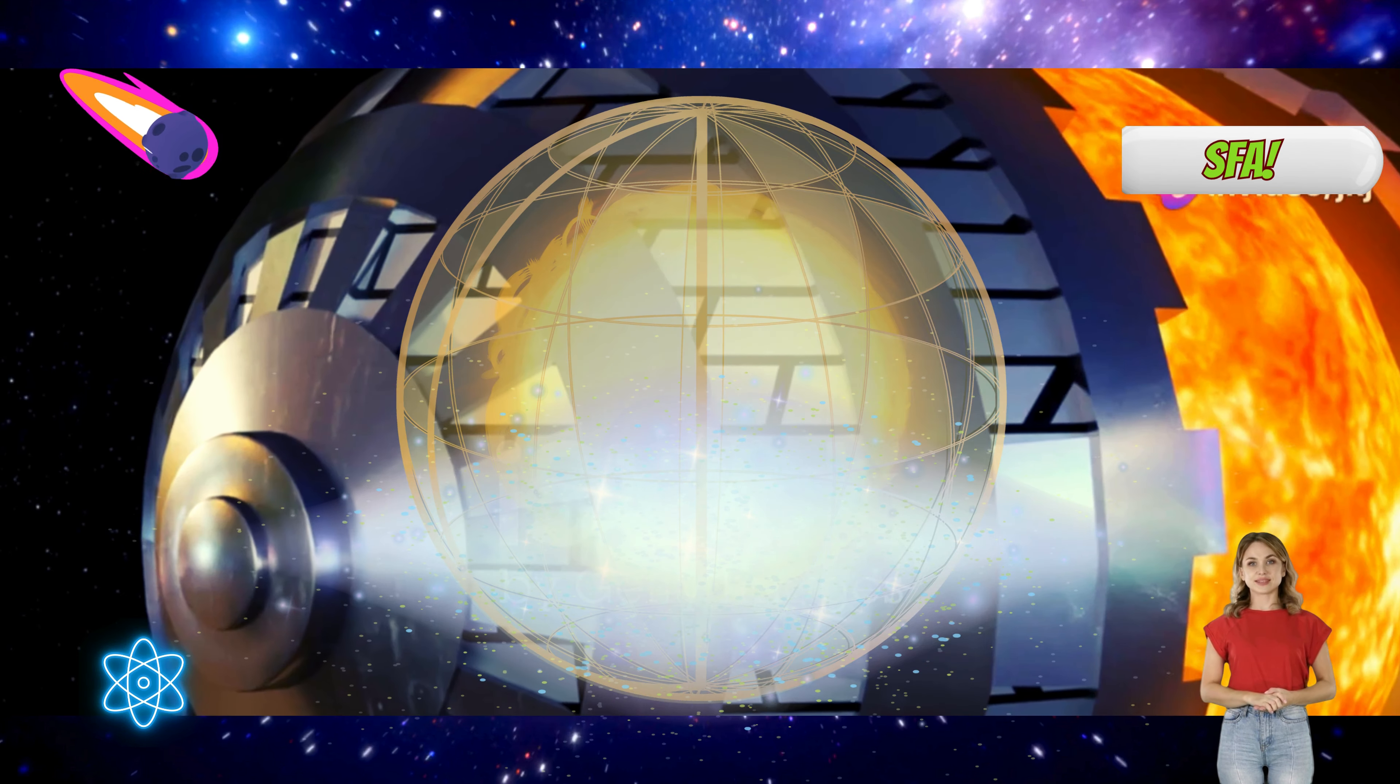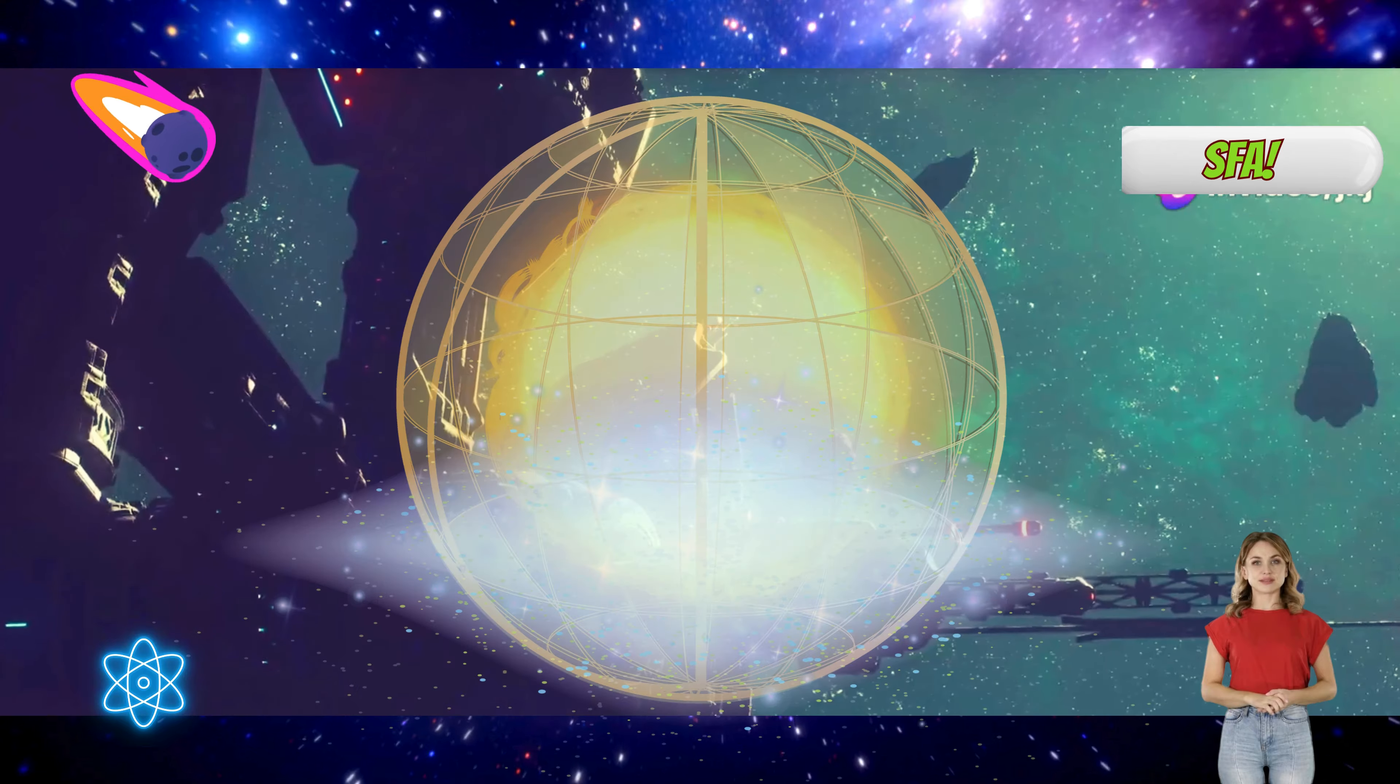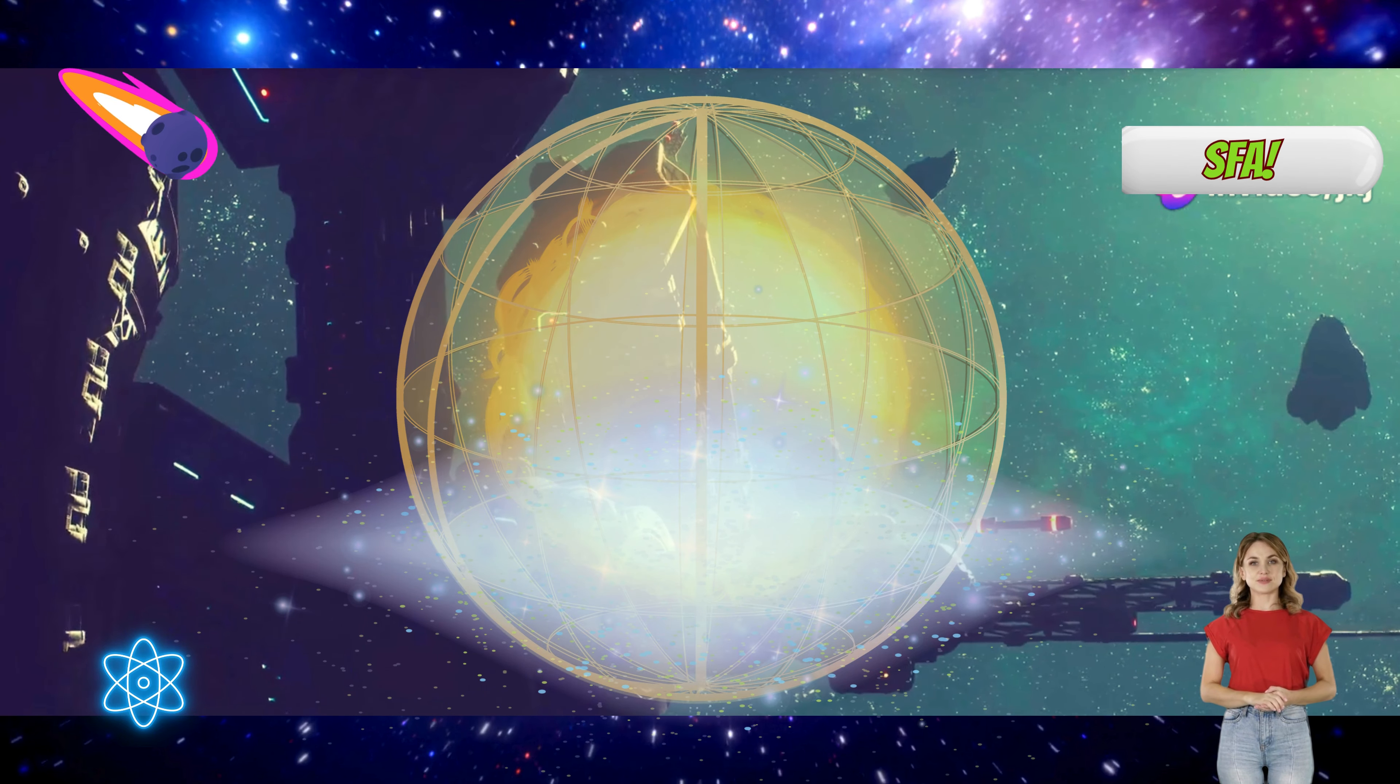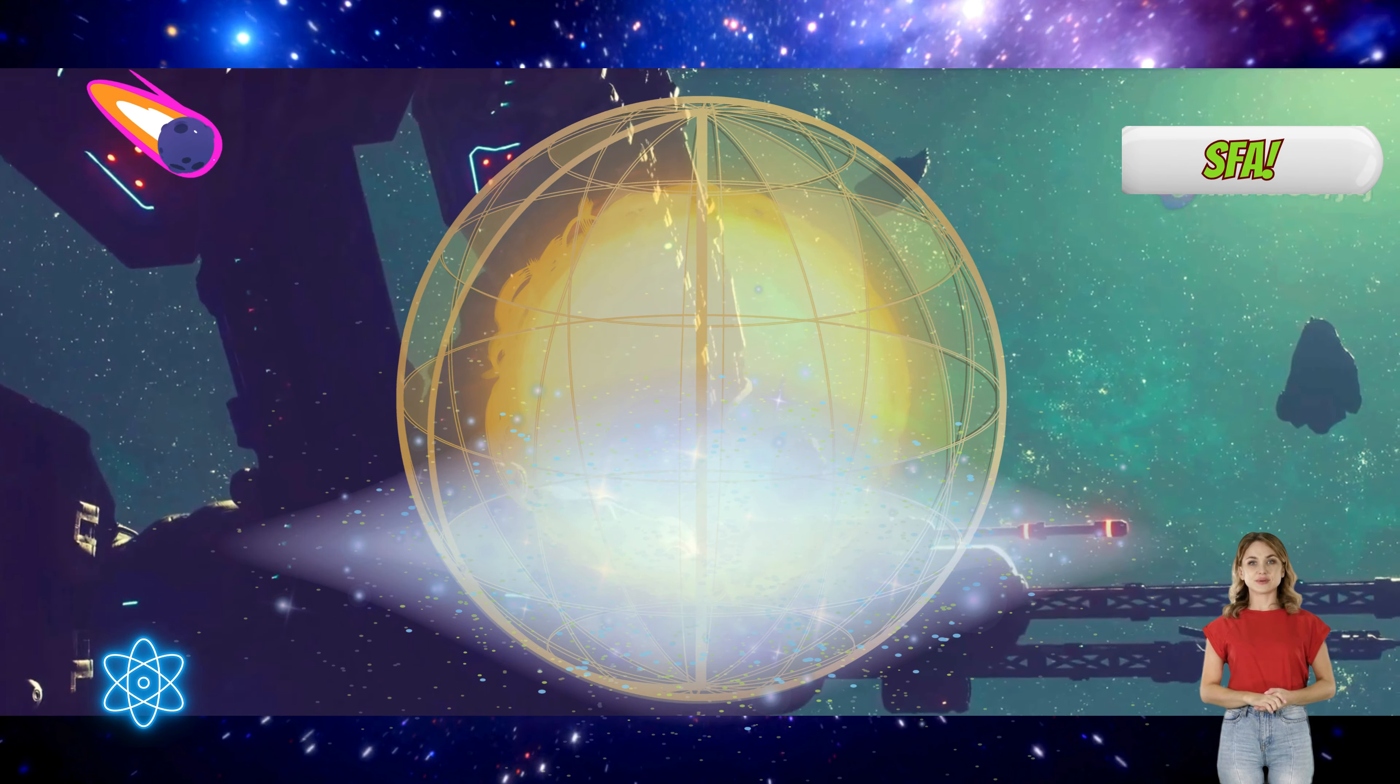Imagine a sphere of colossal proportions encasing a star. This is the Dyson sphere, a hypothetical megastructure conceived by physicist Freeman Dyson. It's a breathtaking concept, a testament to the potential of advanced civilizations to reshape their environment on a stellar scale. The purpose of such a structure is simple, to capture the immense energy output of a star.